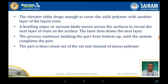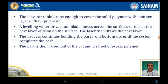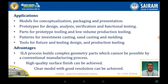After solidifying each cross-section of the photo-curable liquid resin, the elevated table drops enough to cover the solid polymer with another layer of liquid resin. A leveling wiper or vacuum blade moves across the surface to recoat the next layer. The laser then draws the next layer, and the process continues building the part from the bottom up until complete. The part is then raised out of the vat, cleaned, and excess polymer is removed by secondary processes.